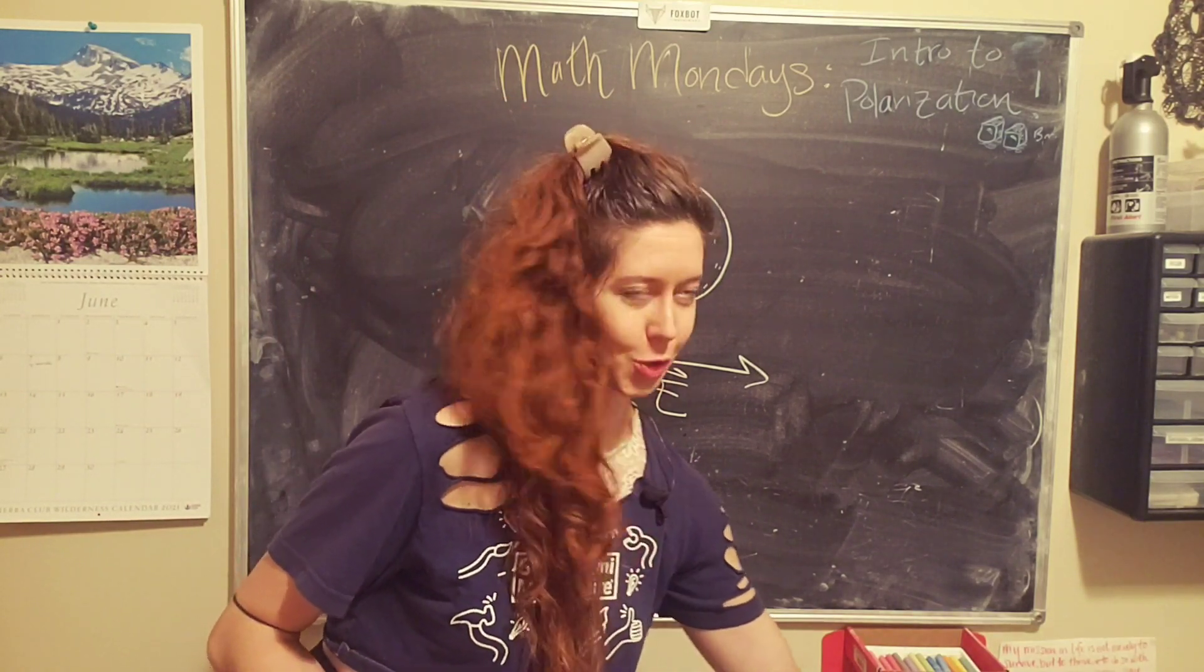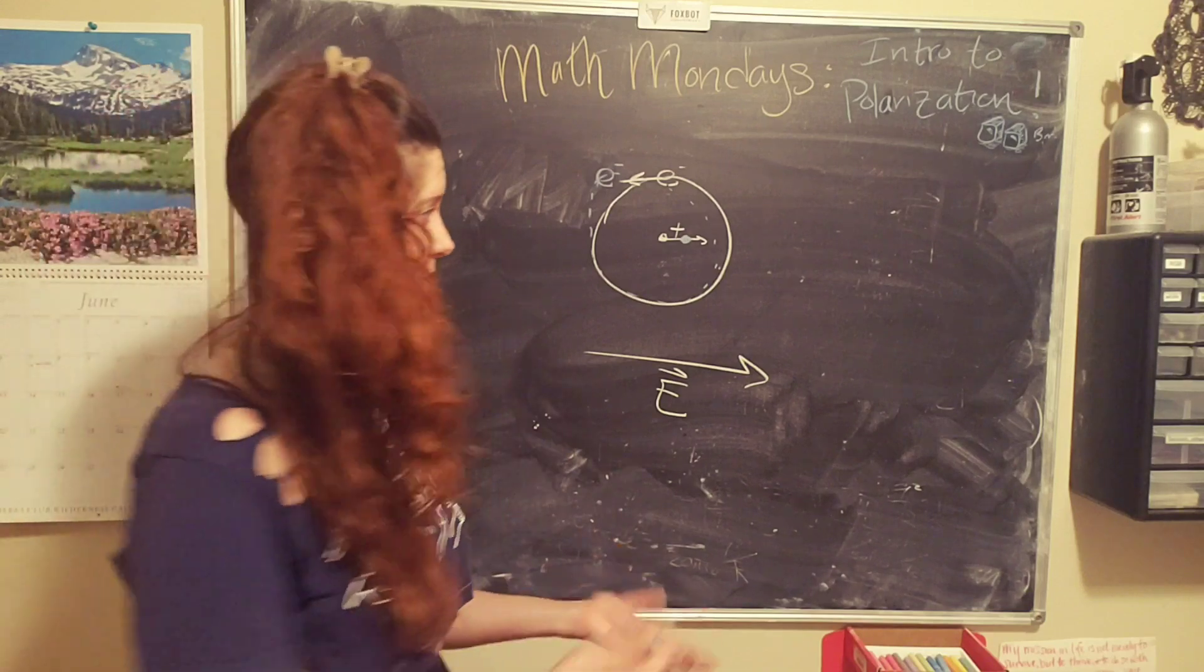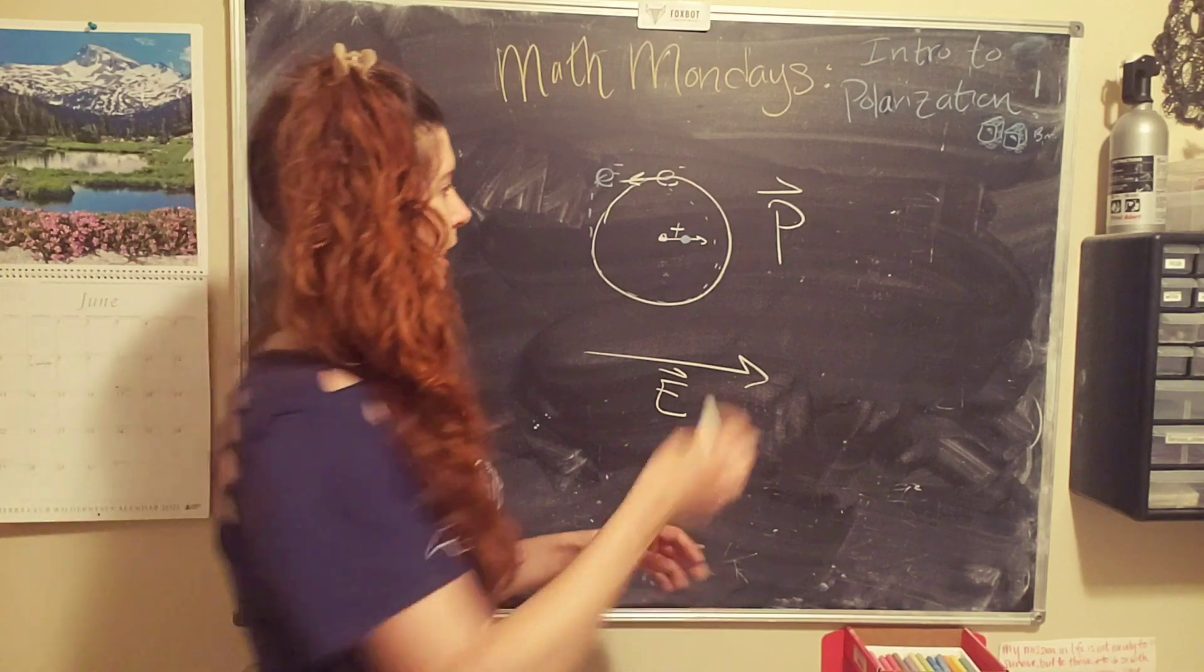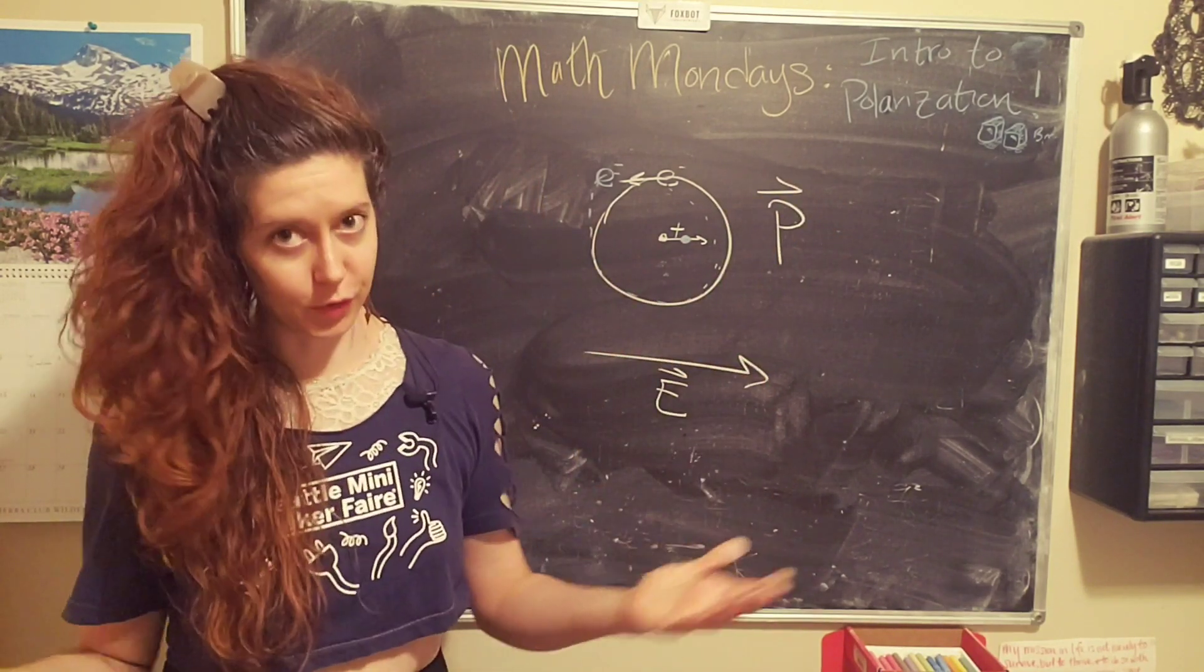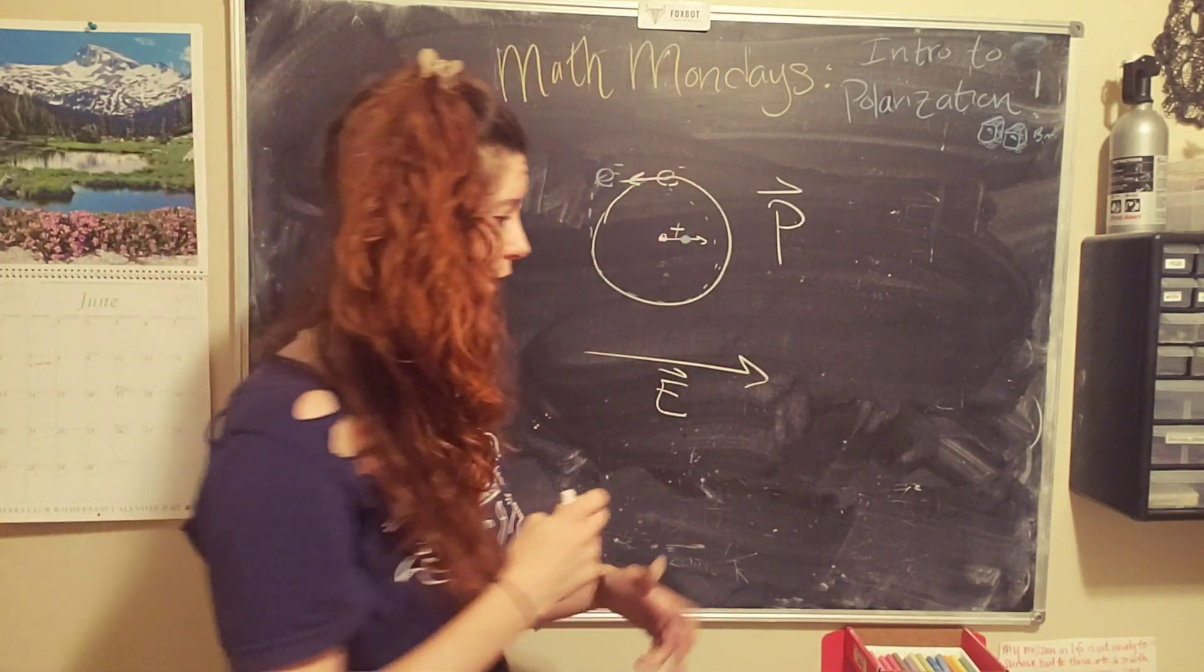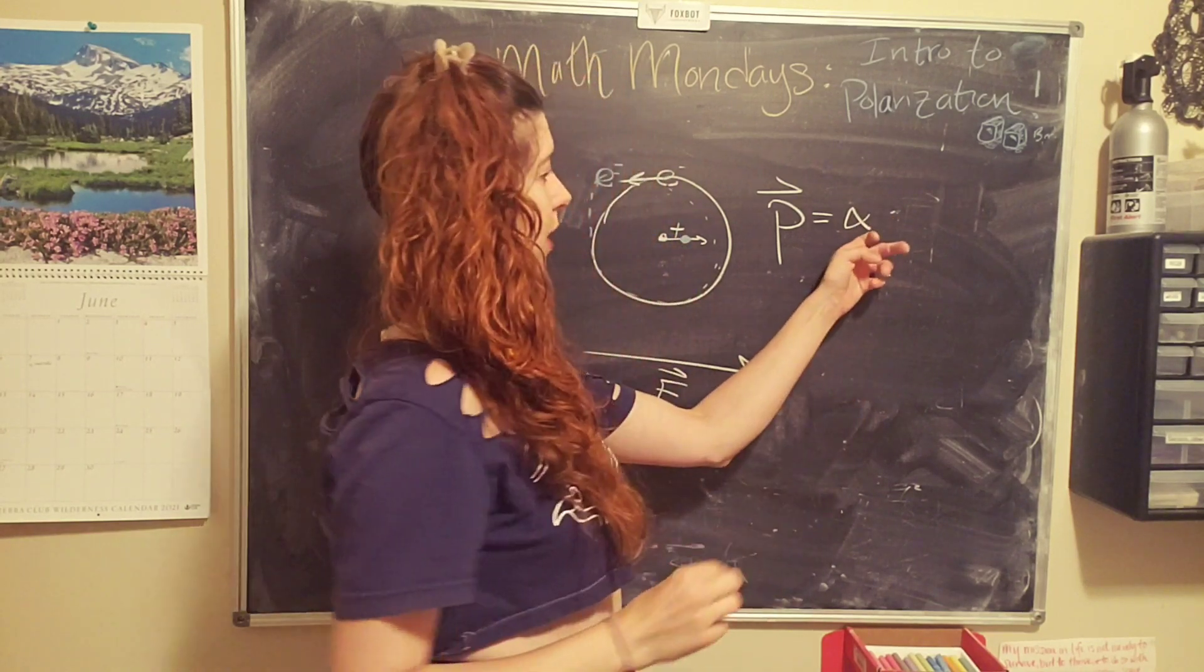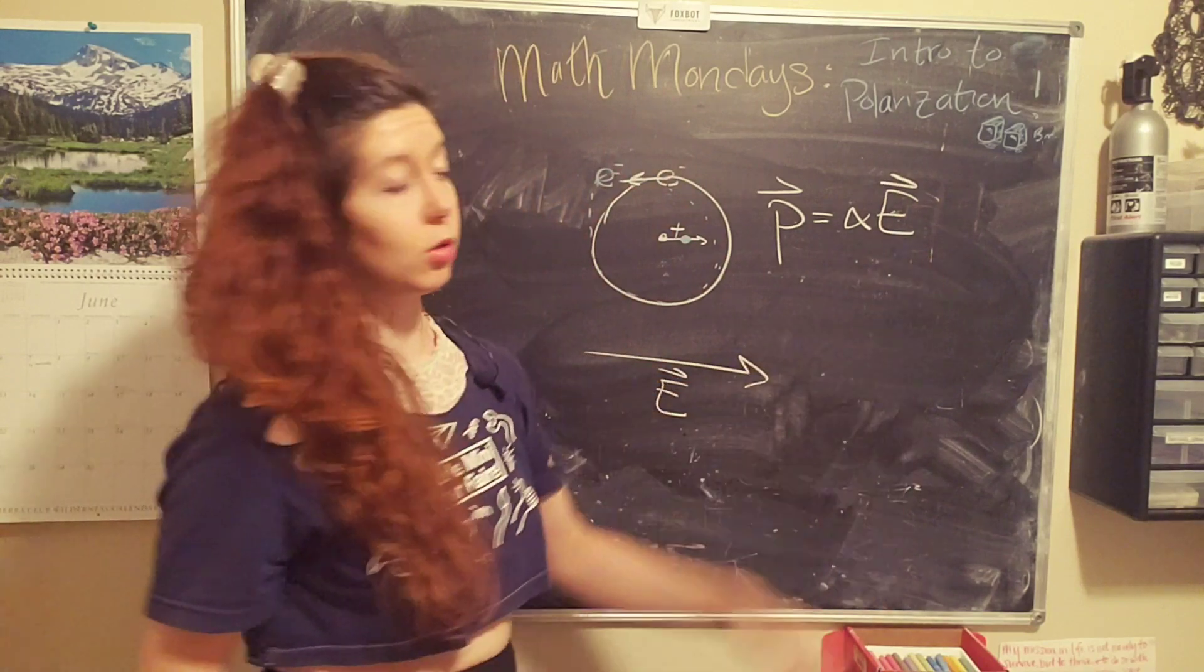How do we measure this? Well, we can use a concept called the electric dipole moment, which has a symbol of p. And it is a vector quantity, because again, the electric field is a vector quantity, these different charges will align with that field. And the equation is equal to a constant times the applied electric field.